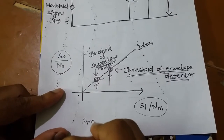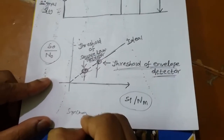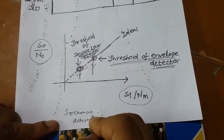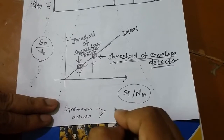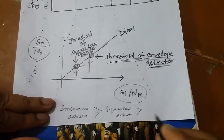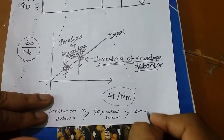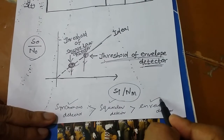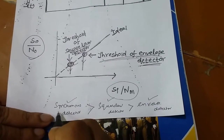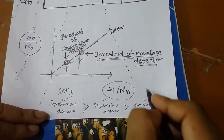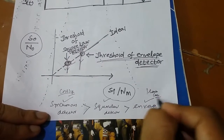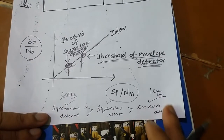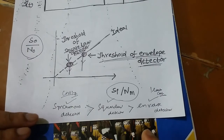Out of the three detectors, the synchronous detector gives the best performance and shows no threshold. The square law detector gives better performance than the envelope detector. So the order is: synchronous detector is best, then square law detector, then envelope detector. However, considering cost, the synchronous detector is the most costly and the envelope detector is the least costly. If cost does not matter, use the synchronous detector; if cost is a concern, use the envelope detector.